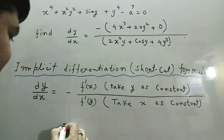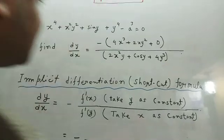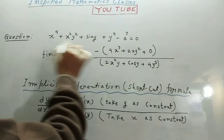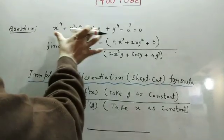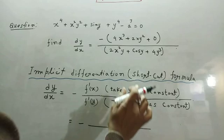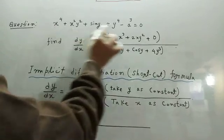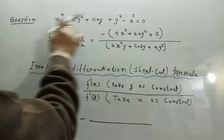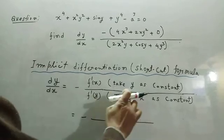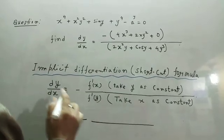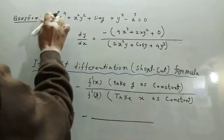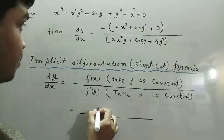The function is this implicit function. For the numerator, we take the derivative with respect to x treating y as constant. Since y is constant, the derivative of x⁴ is 4x³. For the x²y term, y² is constant so the derivative of x² gives 2x. For sin y and y⁴, these are all constant since y is treated as constant.